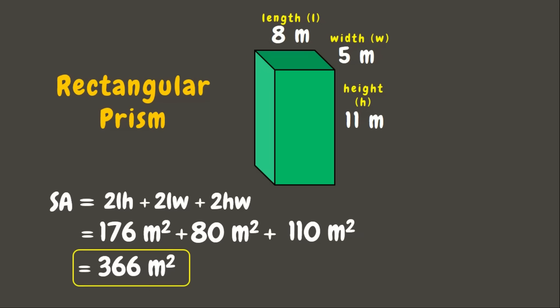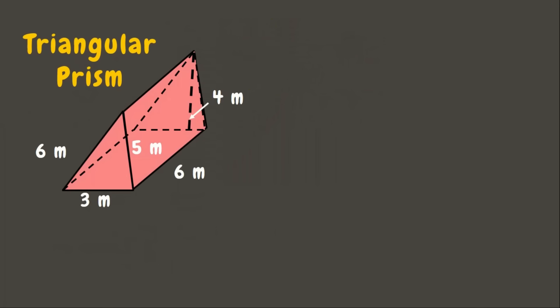We have here a triangular prism whose base is a triangle. It has three sides measuring 6 meters, 5 meters, and 3 meters. The length is 6 meters and the height is 4 meters. The formula for the surface area of a triangular prism is: length times the perimeter of the base (triangle) plus base times the height.